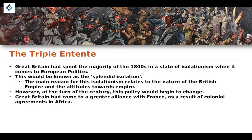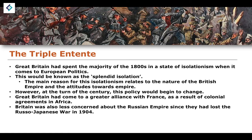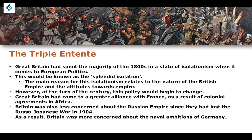Britain was also less concerned about the Russian Empire since Russia had been defeated in 1904 in a conflict against Japan — the Russo-Japanese War. As a result, there was less concern about any kind of conflict with Russia. Russia and Britain had a relatively cordial relationship over the majority of their history when Russia was an imperial state — from 1725 at the death of Peter the Great, moving all the way up to the end of the Romanov dynasty in 1918 — except for particular incidents like the Crimean War. Britain was therefore less concerned about Russia as a threat given Russia's definitive defeat by Japan in 1904.